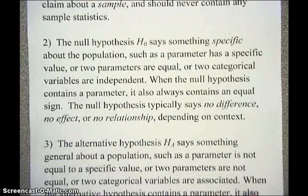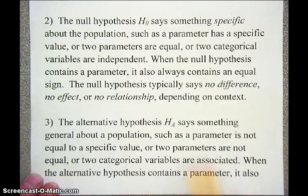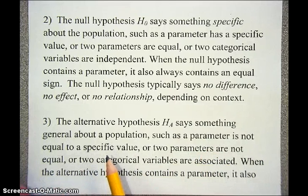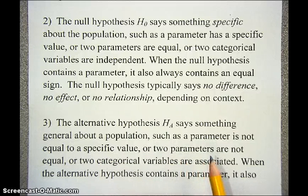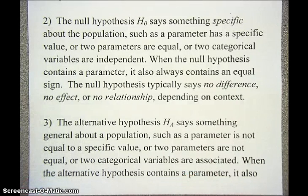The alternative hypothesis says something general, such as a parameter is not equal to a specific value, or two parameters are not equal, or two categorical variables are associated. We're saying the parameter is not equal to this particular value, but we're not saying what the actual value is — just that it's not what the null hypothesis says. Or we're saying these two parameters are not equal, but we're not specifying how unequal they are. And if we think two categorical variables are associated, we're not going to say how — just that they're associated, because they're not independent.